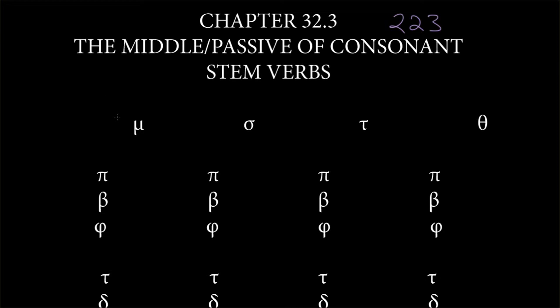And then we have the personal endings for these verbs, which we've already seen: my, sai, tai, and then in the plural, metha, sth, and then lastly, what used to be untai, but we'll see that this gets a little bit complicated as we move on.